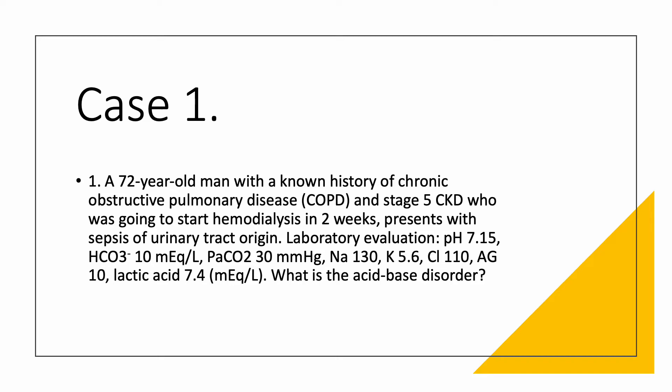When we say there is sepsis, we think especially of anion gap, high anion gap metabolic acidosis, especially with lactic acidosis. We see here we have CKD Stage 5, so we're thinking maybe non-anion gap metabolic acidosis. So there could be more than one thing going on. How do we make the diagnosis?